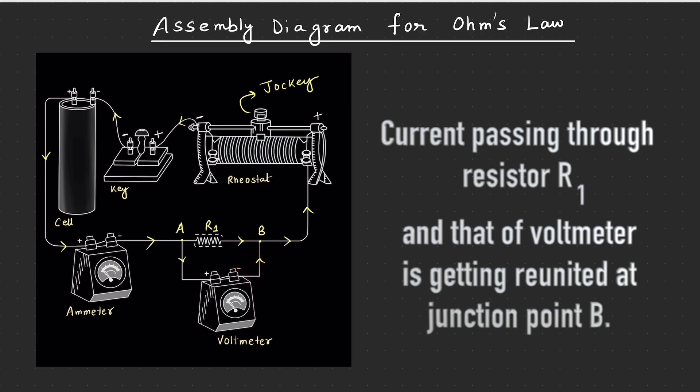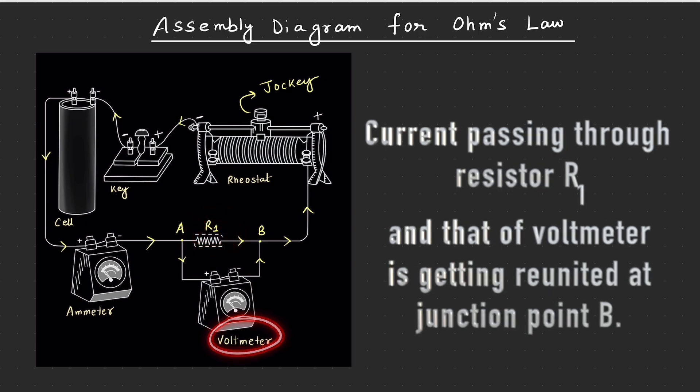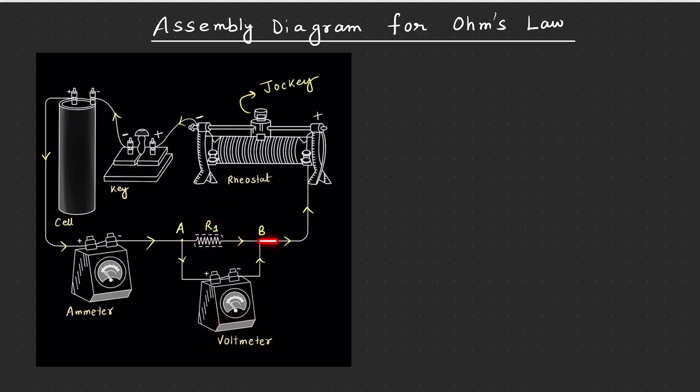wapas se re-meeting ho raha hai, re-uniting ho raha hai. Woh dono flow ka, joh R1 se pass hua tha, as well as joh voltmeter se pass hua tha. B wale point se nikal te huye, the current is now flowing towards the rheostat, which is also called the variable resistance provider.